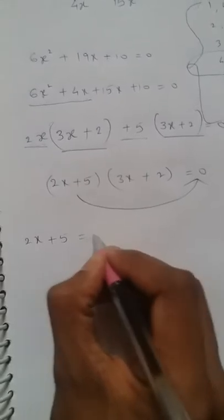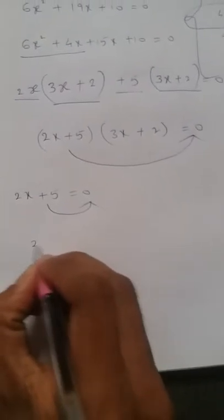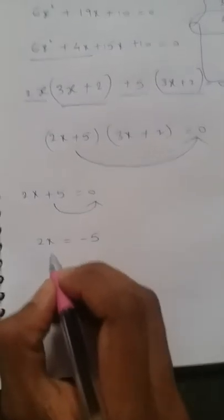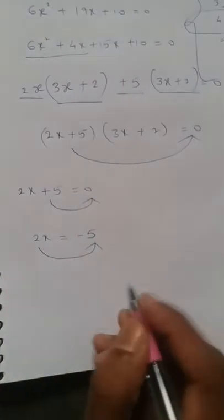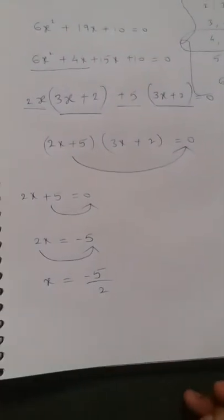Make the first factor equal to 0. That is 2x + 5 = 0. So we want the x value. Take +5 to the right side, it will become -5. 2x = -5. Again, we want x value so take 2 also to that side. x = -5/2.